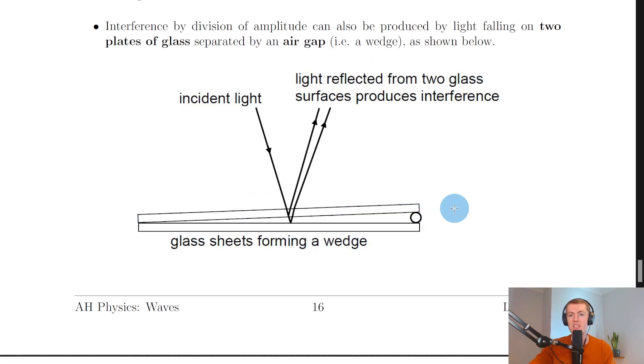This setup allows us to measure the diameter or width of very small objects such as the width of a human hair, a piece of paper, or a thin metal wire. The picture shows the incident light coming in and then light that is reflected from the two glass surfaces and this produces interference just like we've seen in the other applications.